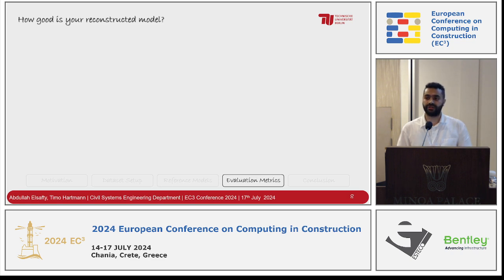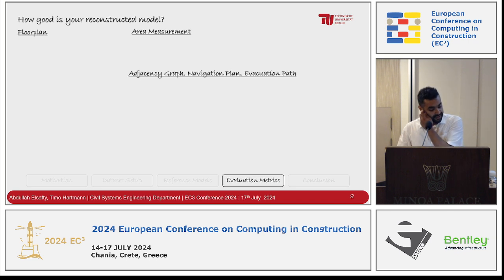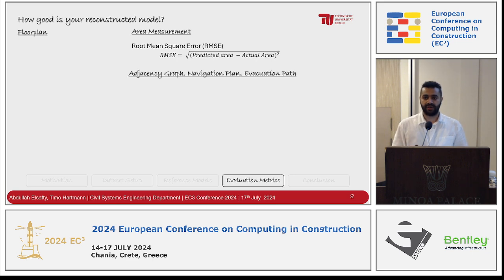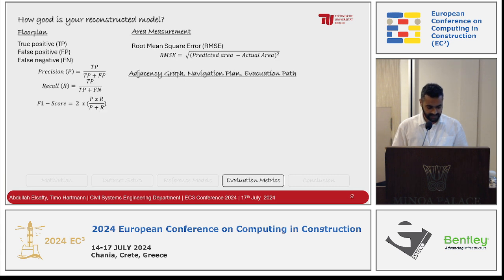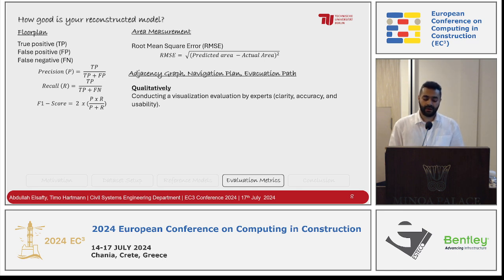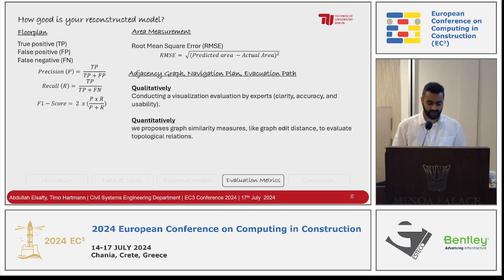Now we can reconstruct a model, but how do we assess whether it's a good model? We proposed evaluation metrics for each application: for area measurement, we propose using root mean square error (RMSE), highlighting the difference between predicted area and accurate area. For floor plans, we use accuracy metrics like precision, recall, and F1 score. For adjacency graphs, we use expert visualization evaluation for clarity and usability, and we also highlight that graph-edit distance is a quantitative method to assess model quality.